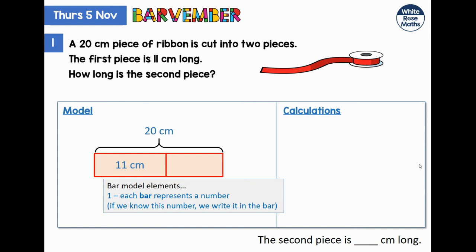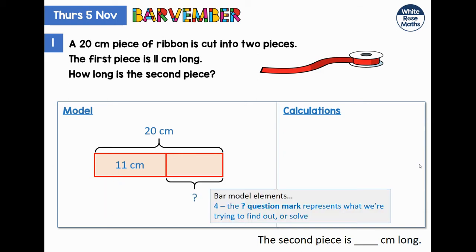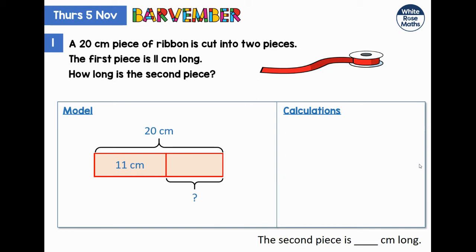Our first bar model element: the bar represents a number, or a part of a bar represents a number. If we know that number, we write it in the bar. The question mark represents what we're trying to find out or solve — that's the same in every bar modelling question. Do not forget your question mark. Hopefully we can see that this is a subtraction question: the total length of our ribbon is 20, we know that part of it is 11, so to find the missing part: 20 minus 11.